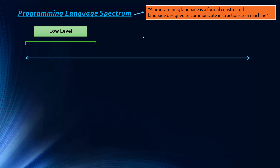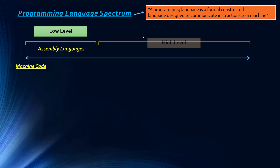At the bottom of the spectrum we have what is known as low level languages. At the very bottom of those we have machine code, which is just binary zeros and ones directly executed by the computer. Then we have assembly languages, which also count as low level, and then we move on to high level languages.